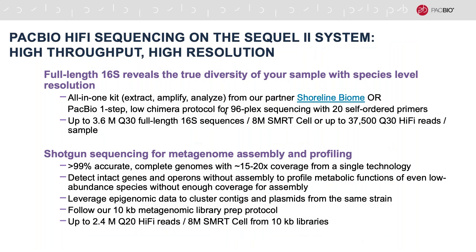For 16S on the Sequel 2 instrument, we have two protocols. One is working with our partner Shoreline Biome, which has an all-in-one kit for extracting, amplifying, and analyzing the data. Alternatively, we have our own protocol: a one-step low chimera protocol for a 96-plex sequencing experiment on Sequel 2 8M cells with asymmetric barcoding using 20 self-ordered primers. With either approach, we expect to generate 3.6 million Q30 full-length 16S sequences per 8M SMRTcell, approximately 37,500 Q30 reads per sample.